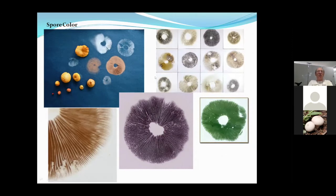Mycologists describe about 25 kinds of brown spore color — clay brown, bright rusty brown, earth brown, and so on. It helps to start distinguishing those brown colors when looking at spore prints.